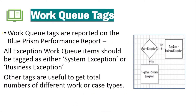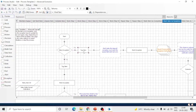The next one is the exception stage. For all exceptions, provide an appropriate exception type and detail. If an item is marked as exception, you should assign a tag to that work queue item. All exception work items should be tagged as either system exception, business exception, internal exception, or validation exception — you can assign the type as per your logic.